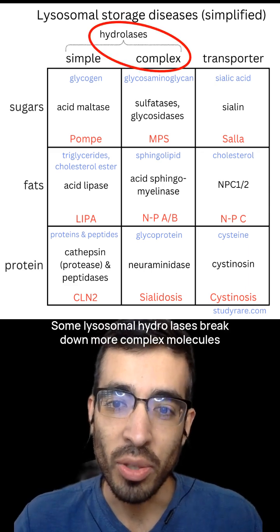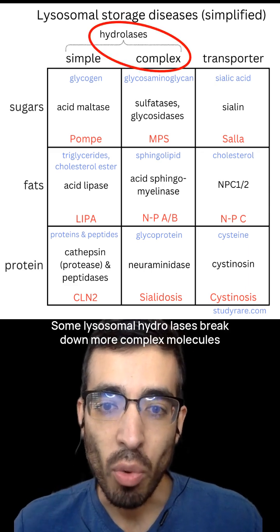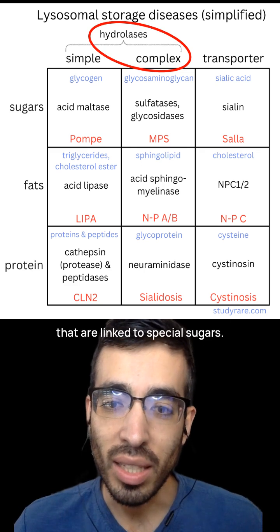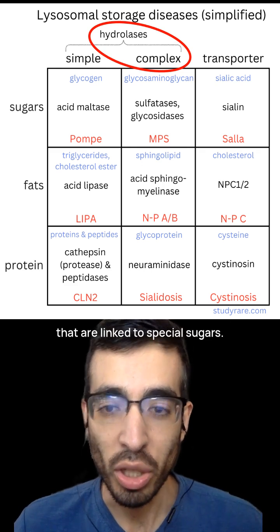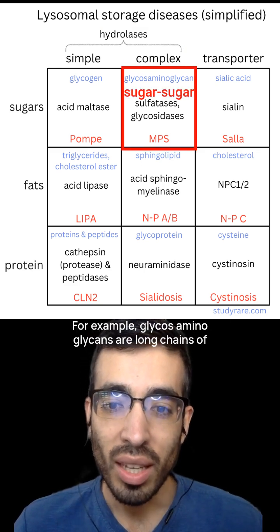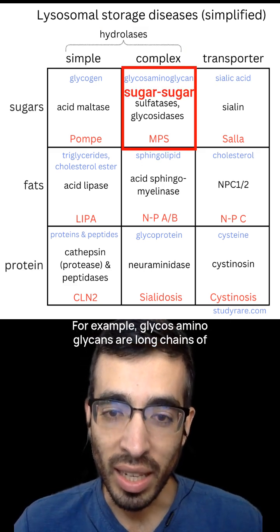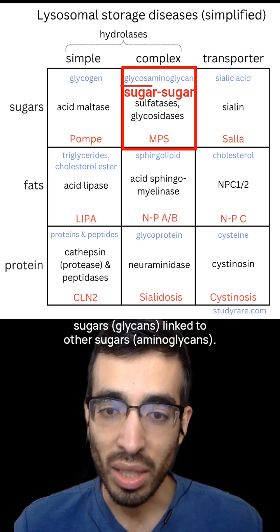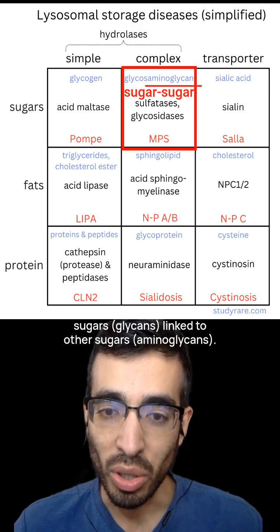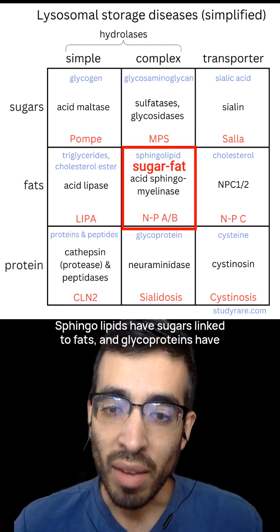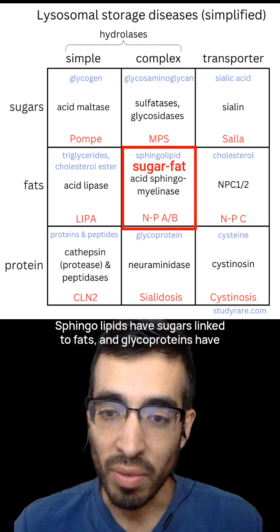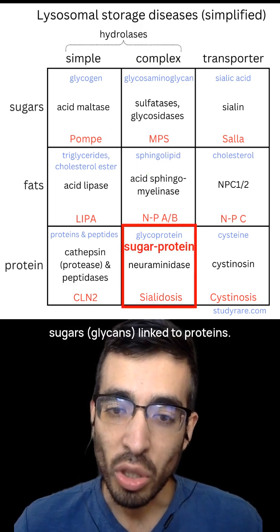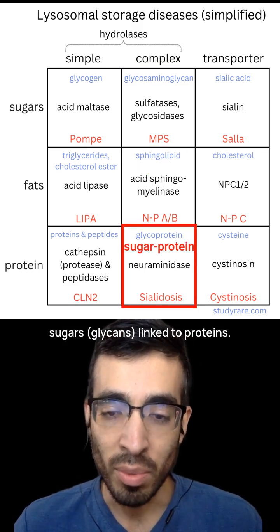Some lysosomal hydrolases break down more complex molecules that are linked to special sugars. For example, glycosaminoglycans are long chains of sugars linked to other sugars. Sphingolipids have sugars linked to fats, and glycoproteins have sugars linked to proteins.